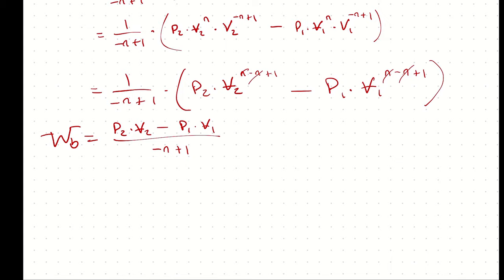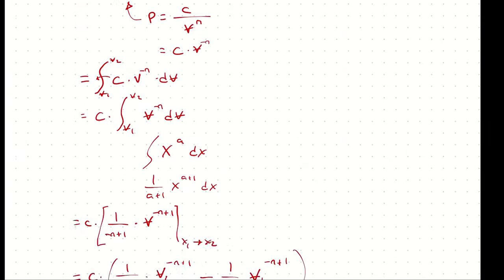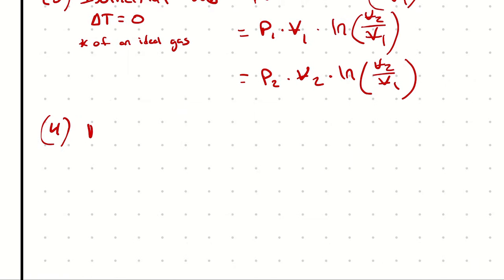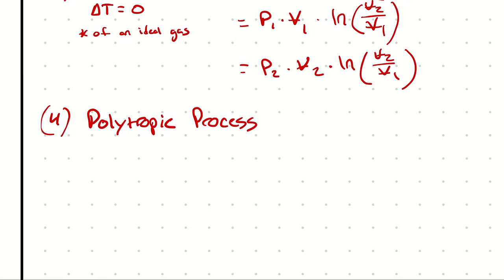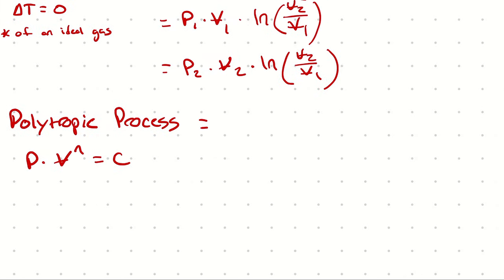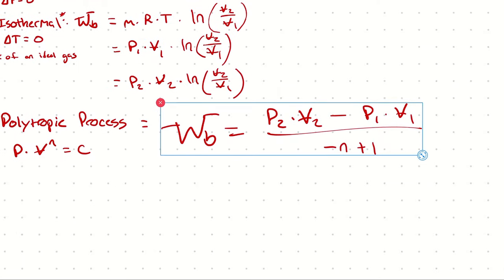I write it as (negative N plus 1) because that phrase rolls off the tongue well and makes it easy to recall. It's P2V2 minus P1V1 over (negative N plus 1) — not negative 1 plus N, not 1 minus N, but negative N plus 1. If it becomes muscle memory, you don't even have to remember it. So under our simplifications for boundary work, for a polytropic process where PV to the N is constant, the boundary work is P2V2 minus P1V1 divided by (negative N plus 1).